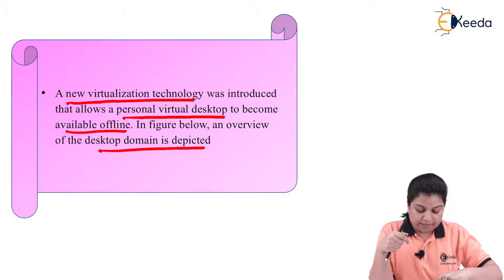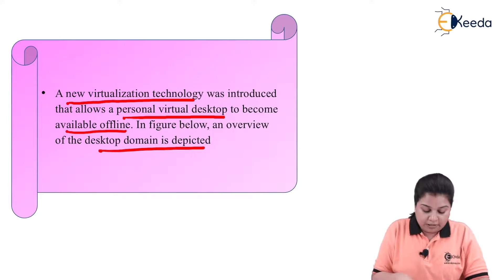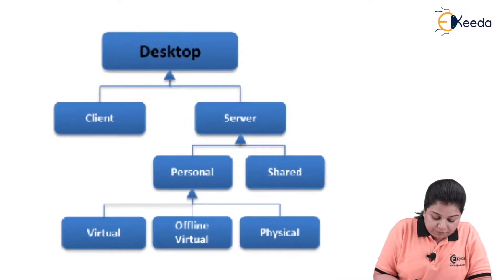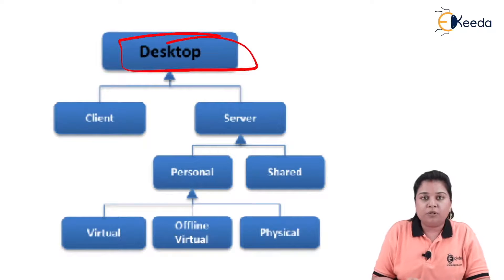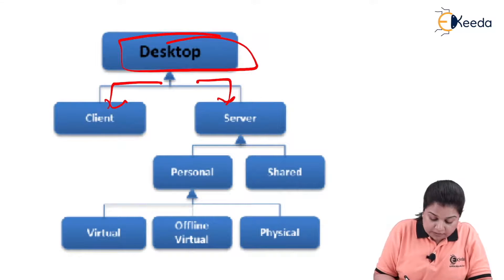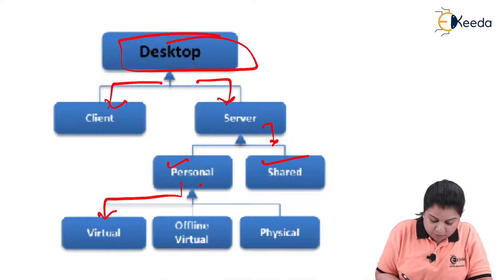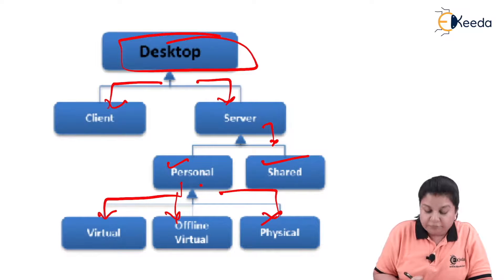Looking at how the desktop domain is subdivided: the superclass is desktop, divided into client and server. Server is then subdivided into personal and shared, and personal is further subdivided into three parts — virtual, offline virtual, and physical.